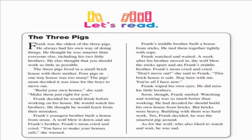Frank's youngest brother built a house from straw. A wolf blew it down and ate Frank's brother. Frank's mom cried and cried. 'You have to make your houses safe,' she warned. Frank's middle brother built a house from sticks. He tied them together tightly with rope. Frank watched and waited. A week after his brother moved in, the wolf blew the sticks apart and ate Frank's middle brother.